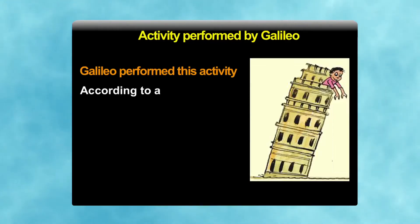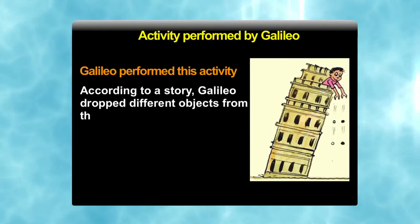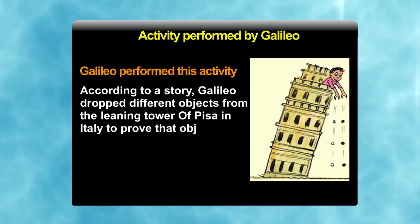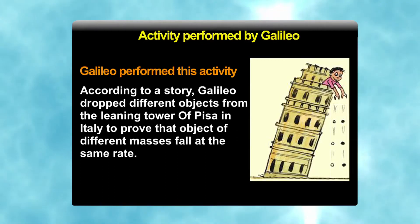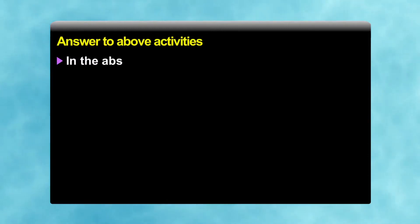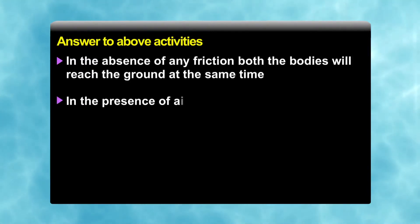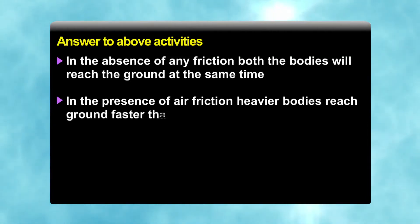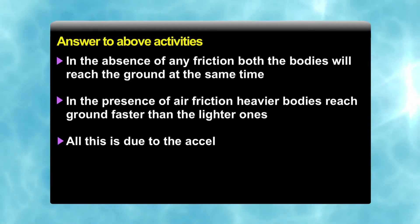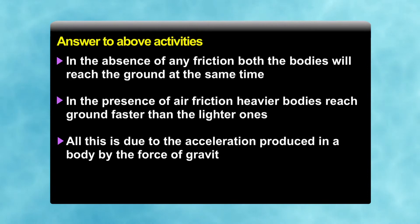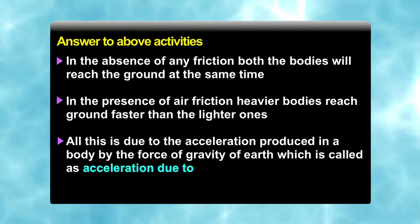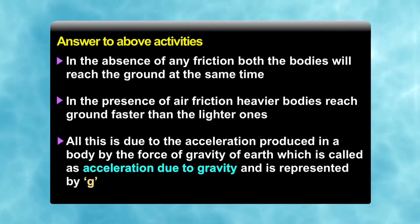This activity was also performed by Galileo long ago. He dropped different objects from the Leaning Tower of Pisa in Italy to prove that objects of different masses fall at the same rate. The answer is that in the absence of any friction, both bodies will reach the ground at the same time. In the presence of air friction, heavier bodies reach the ground faster. All this is due to the acceleration produced in a body by the force of gravity, called acceleration due to gravity, represented by small g.